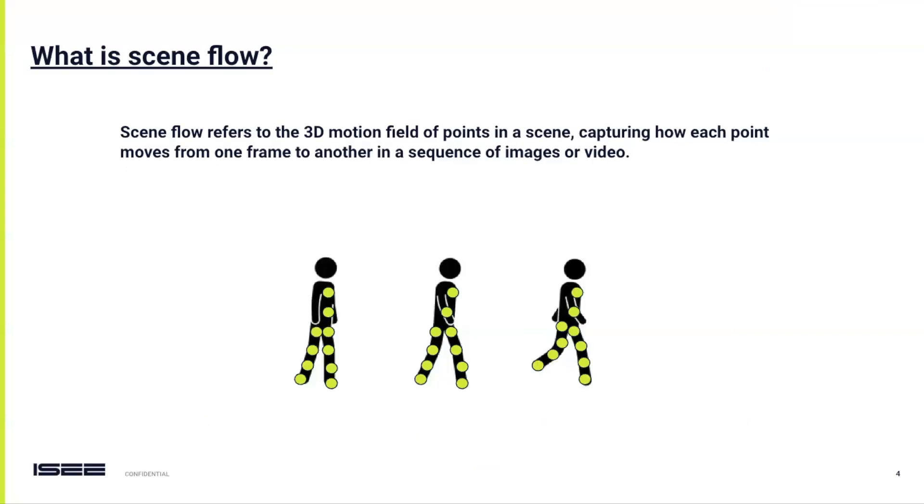To begin with, let's answer the question: what is scene flow? Scene flow refers to the 3D motion fields of points in a scene, capturing how each point moves from one frame to another, similar to how optical flow works in 2D.